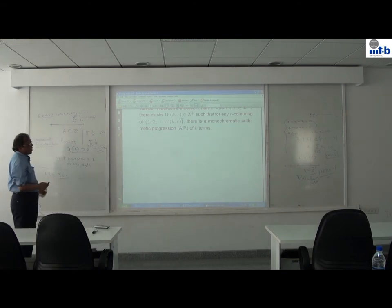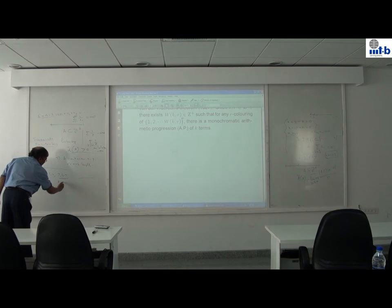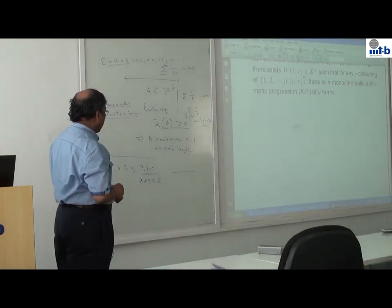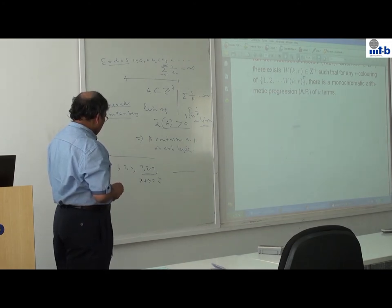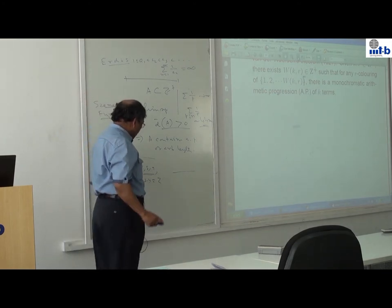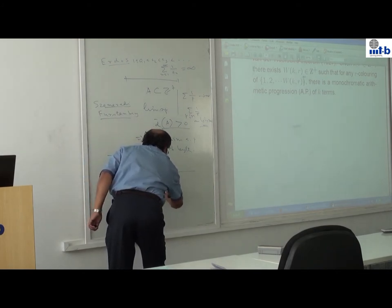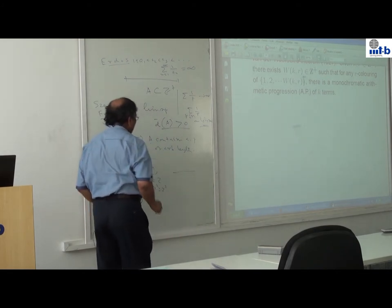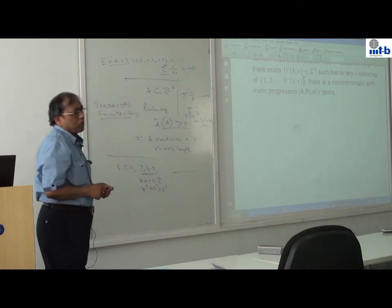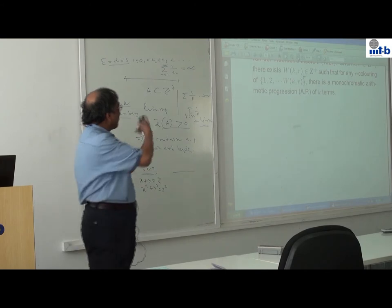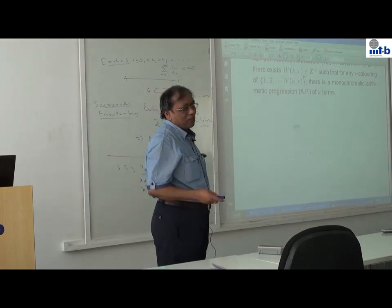I will mention one open question: we know that x + y = z is regular, meaning given any finite coloring of positive integers, there is a monochromatic solution. But what about x² + y² = z²? Is it regular? Nobody knows. This is open. With this I stop, but I am around, so we can talk sometime. Thank you very much.